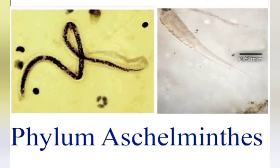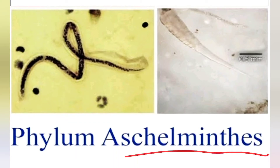Hello everyone, welcome to my YouTube channel. In this video we are going to start Phylum Aschelminthes, which is also known as Phylum Nematoda and Phylum Annelida. Let us start from Phylum Aschelminthes. Phylum Aschelminthes is commonly known as roundworms.